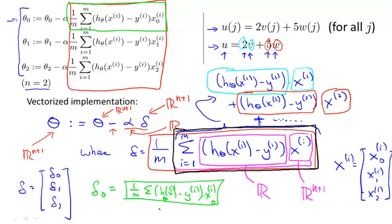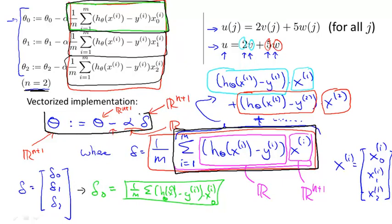And concretely, the three elements of delta correspond, if n equals 2, the three elements of delta correspond exactly to this thing, to the second thing, and this third thing. Which is why when you update theta, according to theta minus alpha delta, we end up carrying exactly the same simultaneous updates as the update rules that we had on top. So I know that there was a lot that happened on this slide.